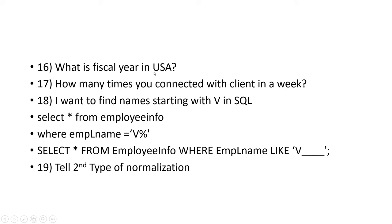Question seventeen: what is the fiscal year in the US? In India the fiscal year is April 1st to March 31st. In the USA the fiscal year runs from October 1st to September 30th. This is asked because if your client is from the US and you're working on Time Intelligence and date-related KPIs, you must know their fiscal year.